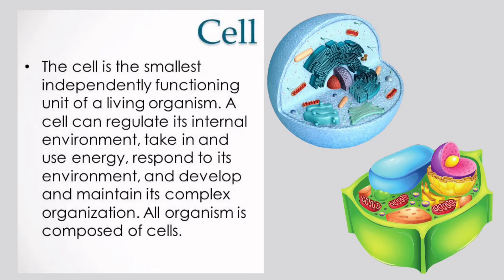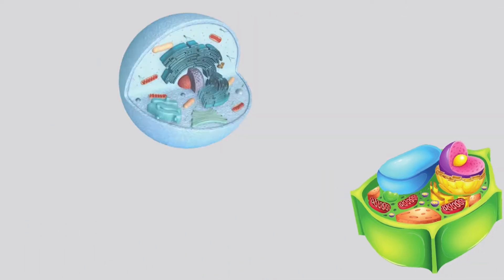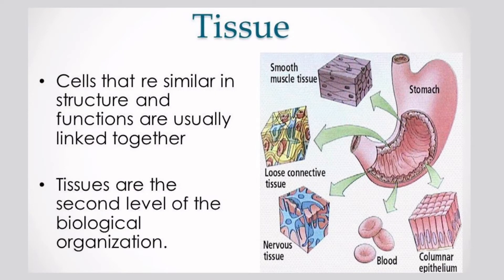All organisms are composed of cells. In any multicellular organism, cells do not function alone. Cells that are similar in structure and function are usually linked together to form tissues. Tissues are the second level of biological organization.